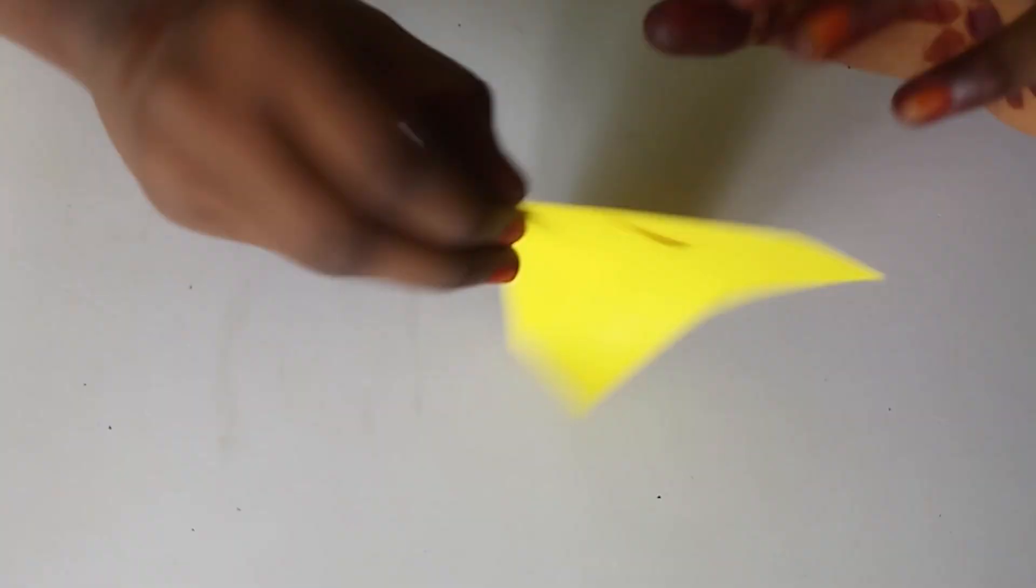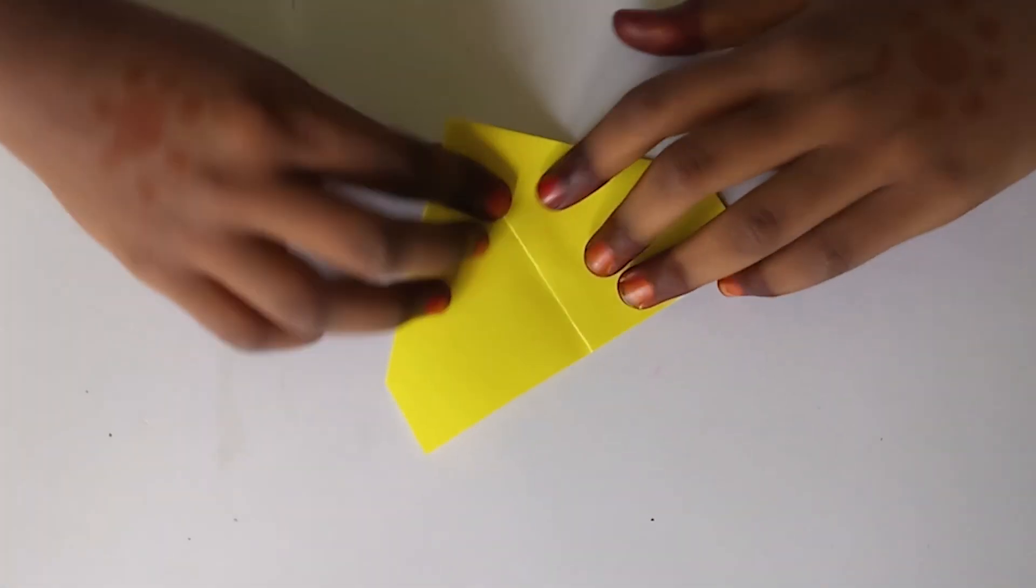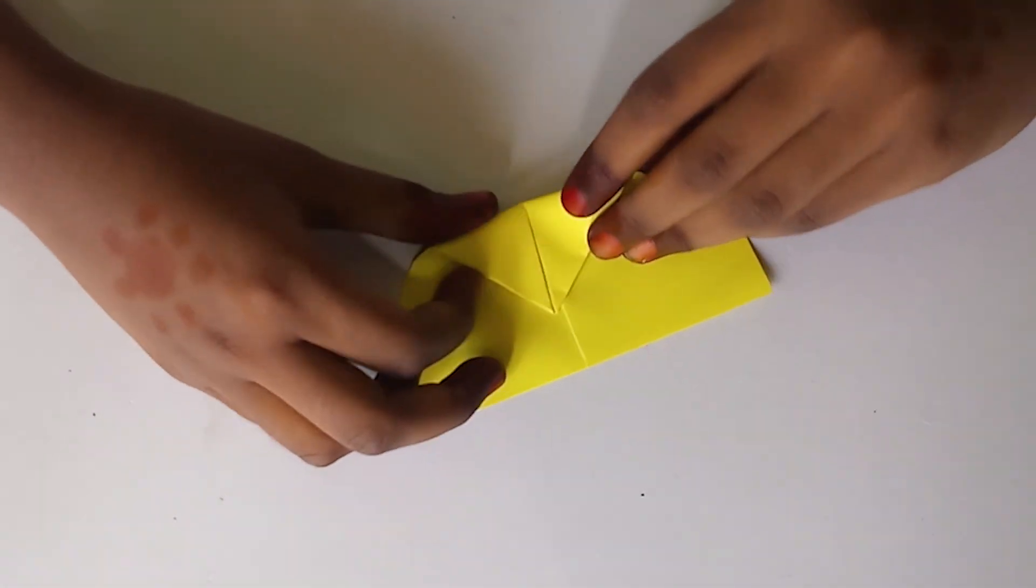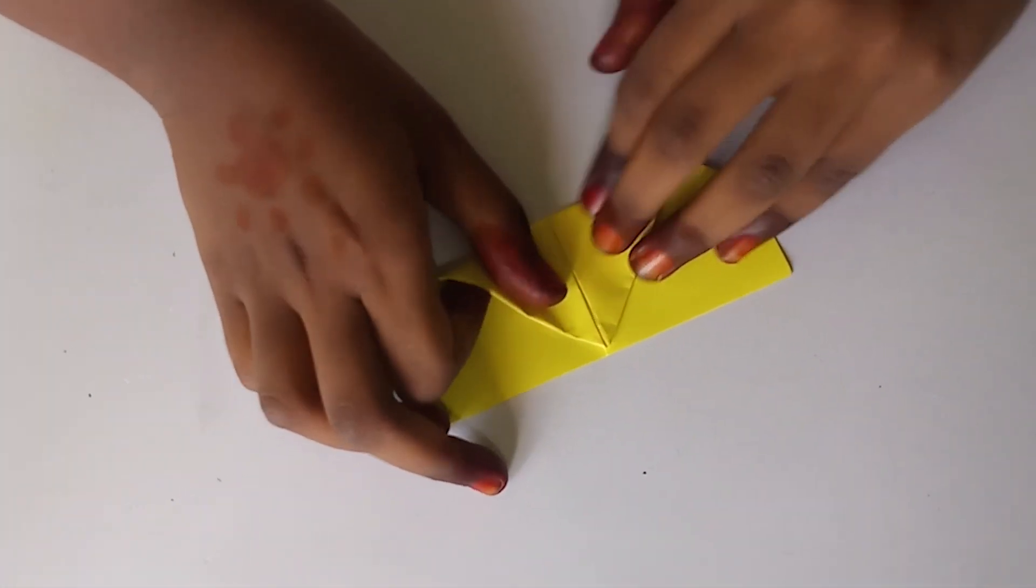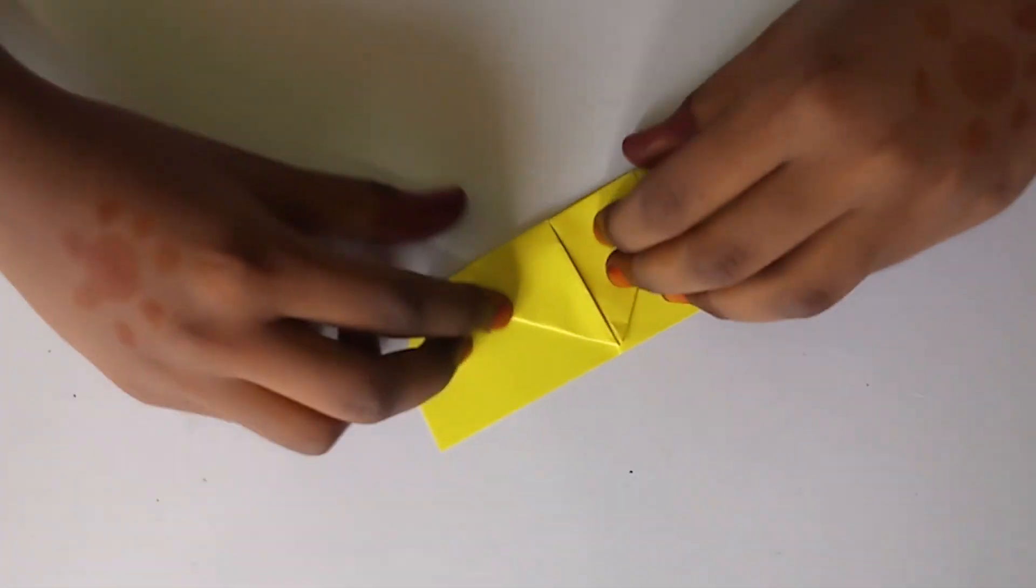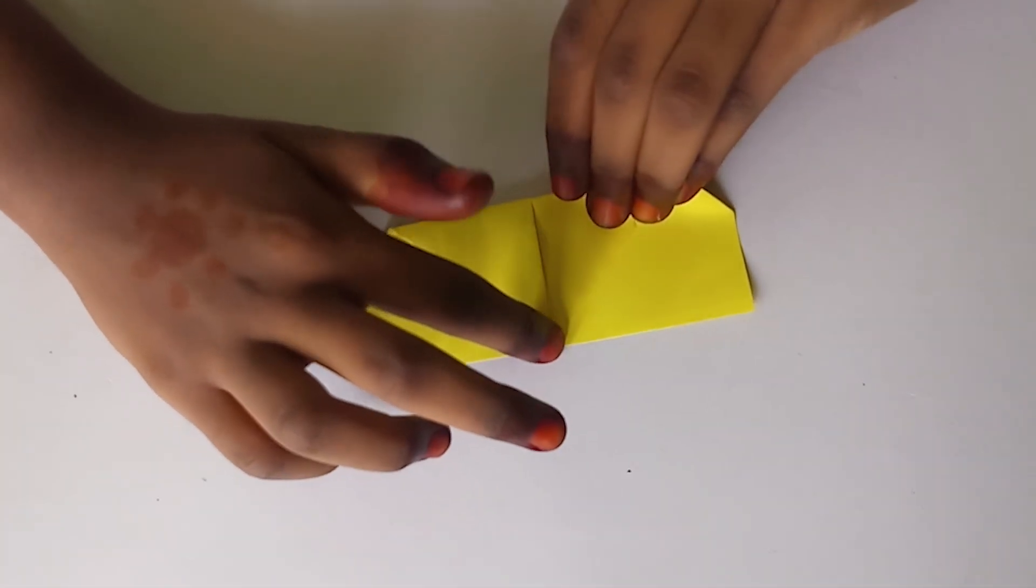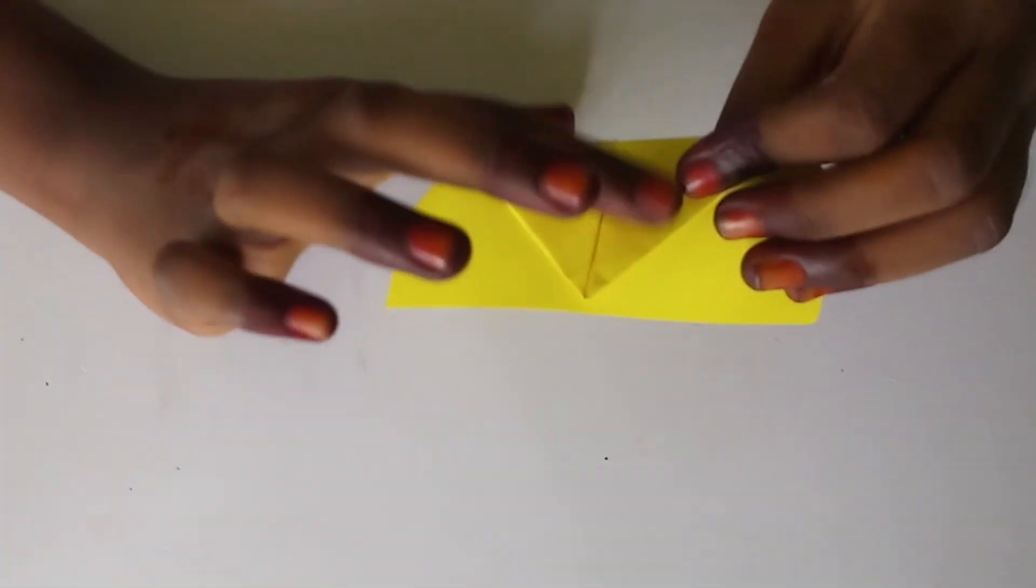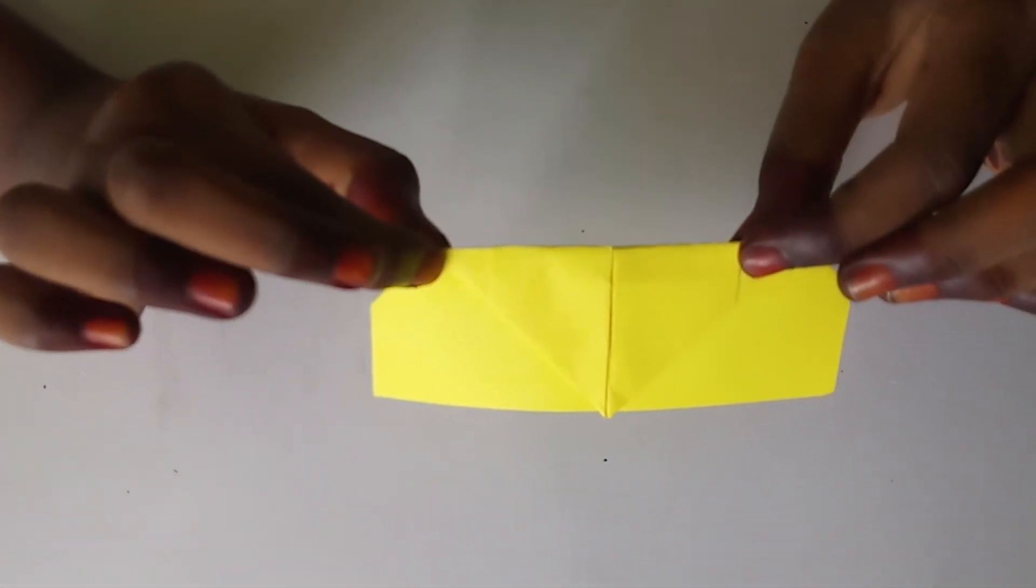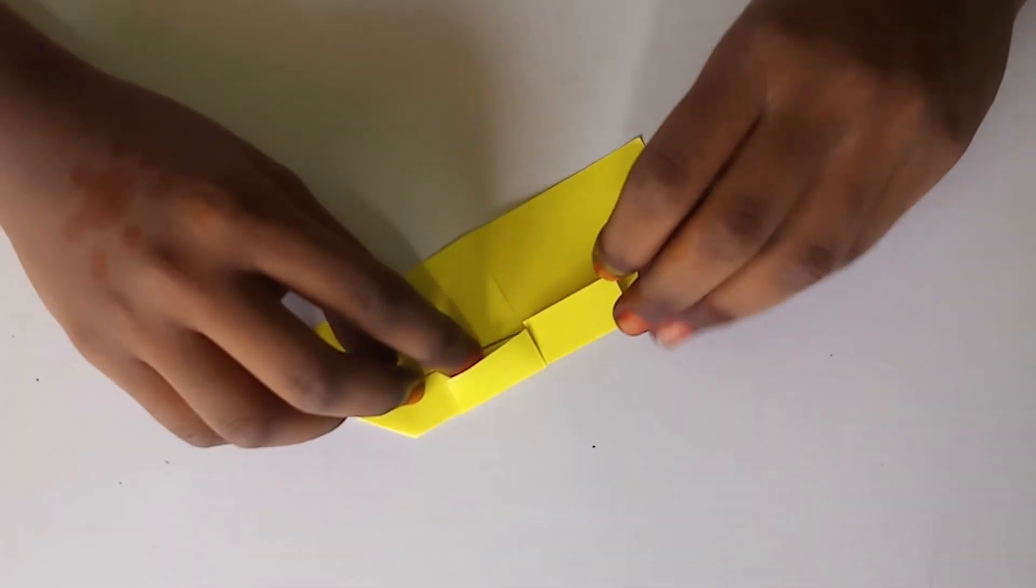Now, turn the paper. Fold vertically. This edge should be like this triangle shape. Turn the paper.